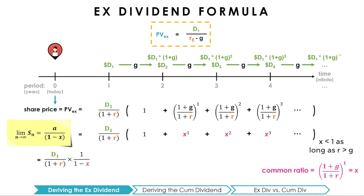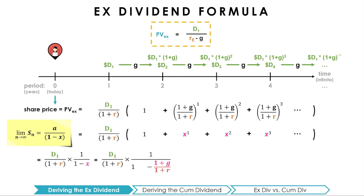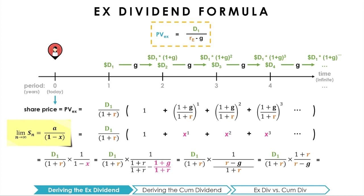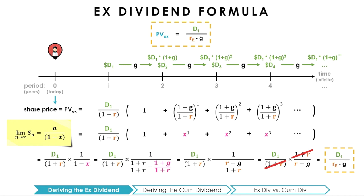From here, we perform simple algebra to simplify. We substitute (1+G)/(1+R) back in for x. We are left with a complex fraction, which we condense by rewriting 1 as (1+R)/(1+R), so the denominator is expressed as one fraction. This complex fraction is rewritten by taking the reciprocal, leaving (1+R) in the numerator and (R minus G) in the denominator. Finally, the (1+R) terms cancel, leaving us the ex-dividend formula: the price of a stock equals D1 — next year's dividend — divided by (RE minus G), the constant growth rate.